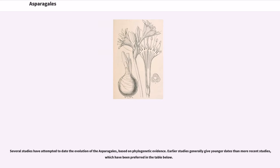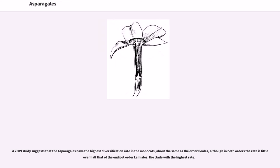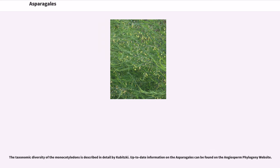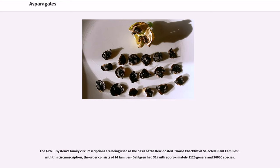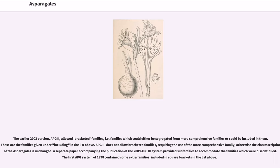Several studies have attempted to date the evolution of the Asparagales based on phylogenetic evidence. A 2009 study suggests that the Asparagales have the highest diversification rate in the monocots, about the same as the order Poales, although in both orders the rate is little over half that of the eudicot order Lamiales, the clade with the highest rate. With the APG3 circumscription, the order consists of 14 families — Dahlgren had 31 — with approximately 1,120 genera and 26,000 species.